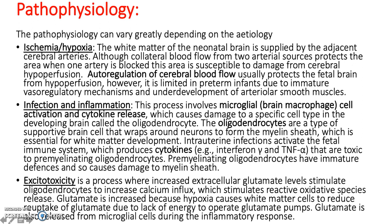Infection and inflammation: this process involves microglial brain macrophage cells, activation and cytokine release, which causes damage to a specific cell type in the developing brain called the oligodendrocyte. Oligodendrocytes are a type of supportive brain cell that wraps around neurons to form the myelin sheath, which is essential for white matter development. Intrauterine infections activate the fetal immune system, which produces cytokines. Cytokines are toxic to premyelinating oligodendrocytes, which have immature defences, causing damage to the myelin sheath.